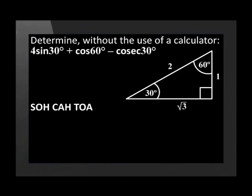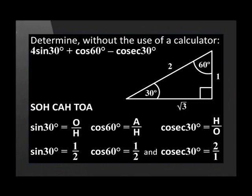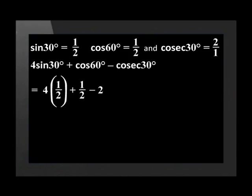From SOH-CAH-TOA we know that sin equals opposite over hypotenuse. Cos equals adjacent over hypotenuse. Cosec is the reciprocal of sin, so it equals hypotenuse over opposite. From our triangle we see that sin 30 equals 1 over 2, cos 60 equals 1 over 2, and cosec 30 equals 2 over 1. Substitute these values in and we get 4 times a half plus a half minus 2. This is simplified to 2 plus a half minus 2, which is equal to half.